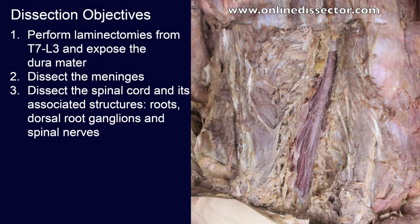Previously, the superficial and intermediate muscles of the back were dissected, and the erector spinae muscles were removed from the thoracic and lumbar vertebrae. In this video, I will demonstrate how to expose the meningeal layers of the spinal cord and the spinal cord itself. There are three dissection objectives. First, I will perform laminectomies from T7 to L3 and expose the dura mater.